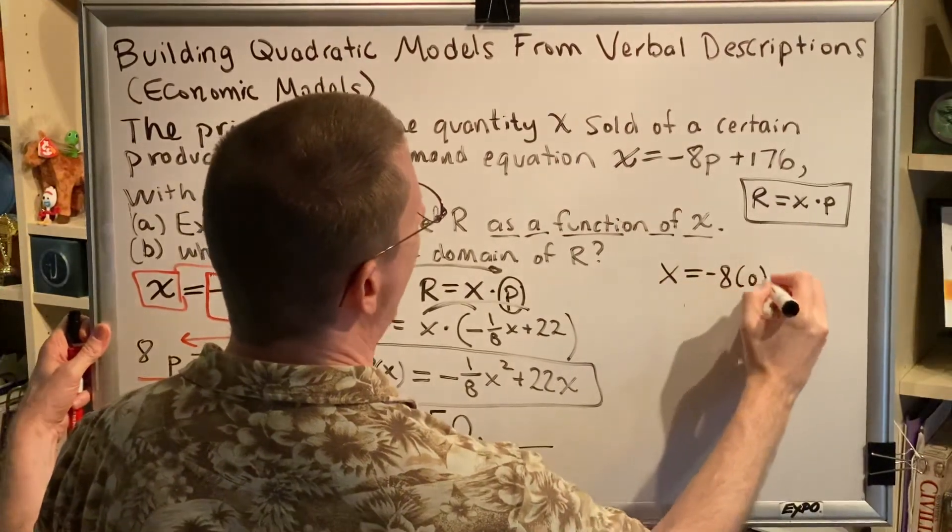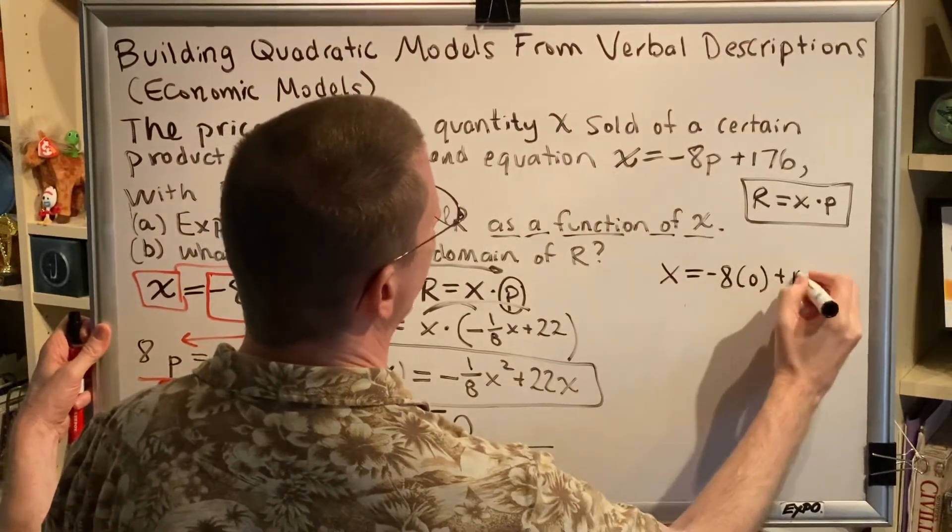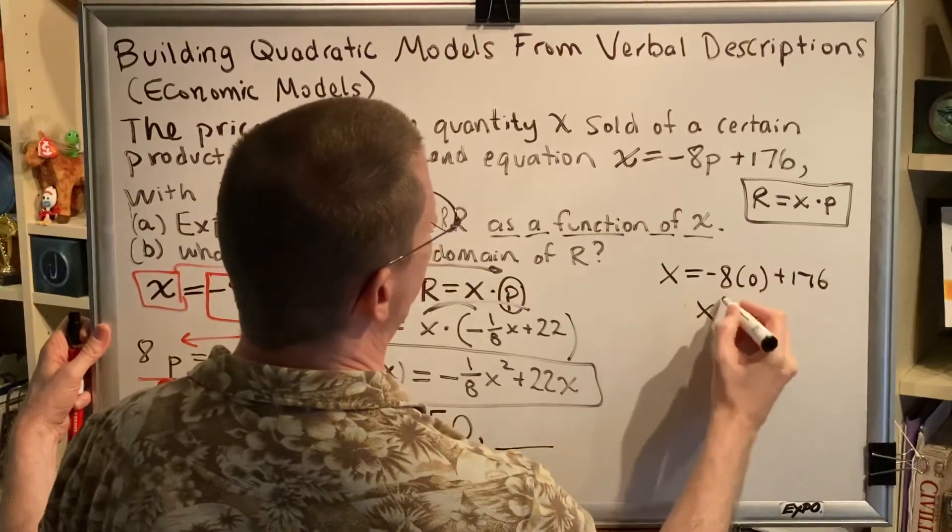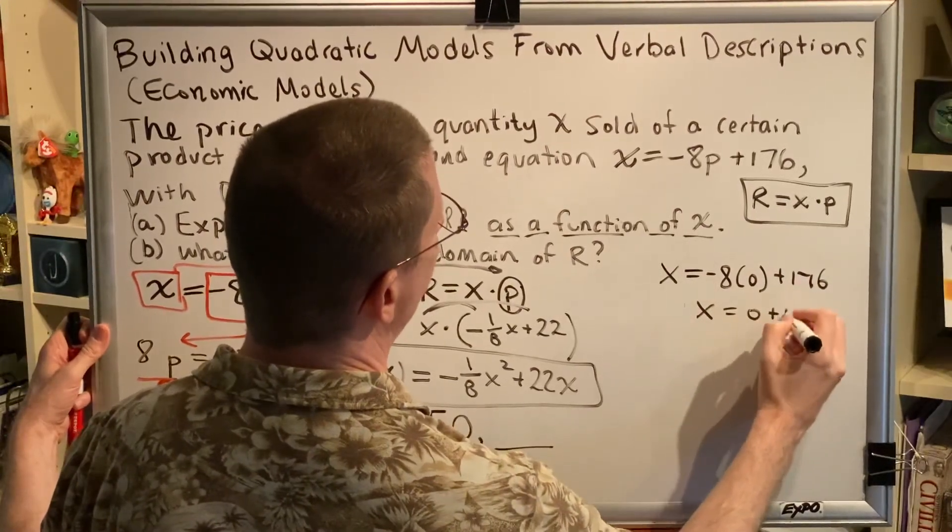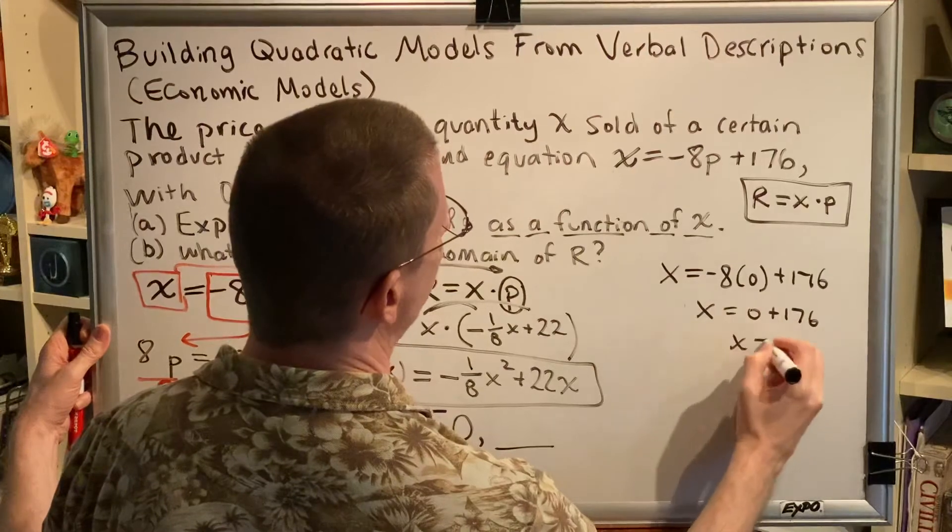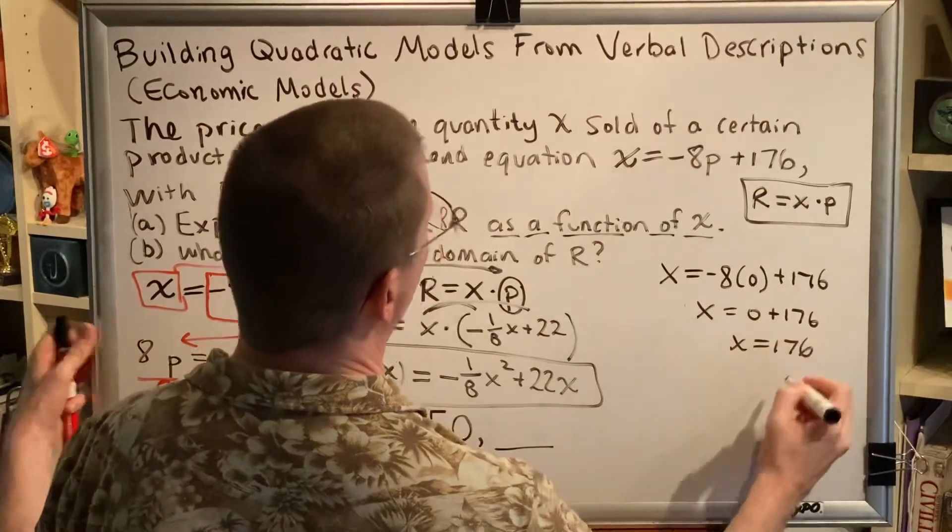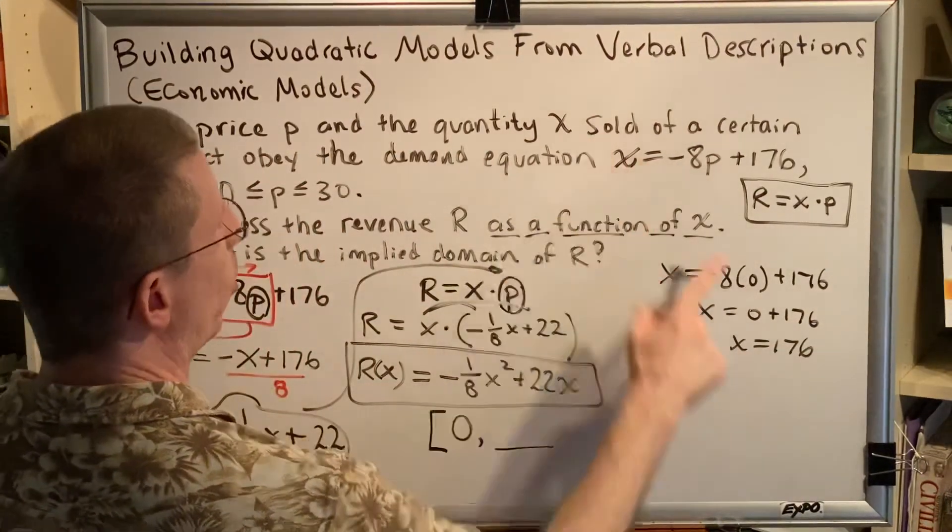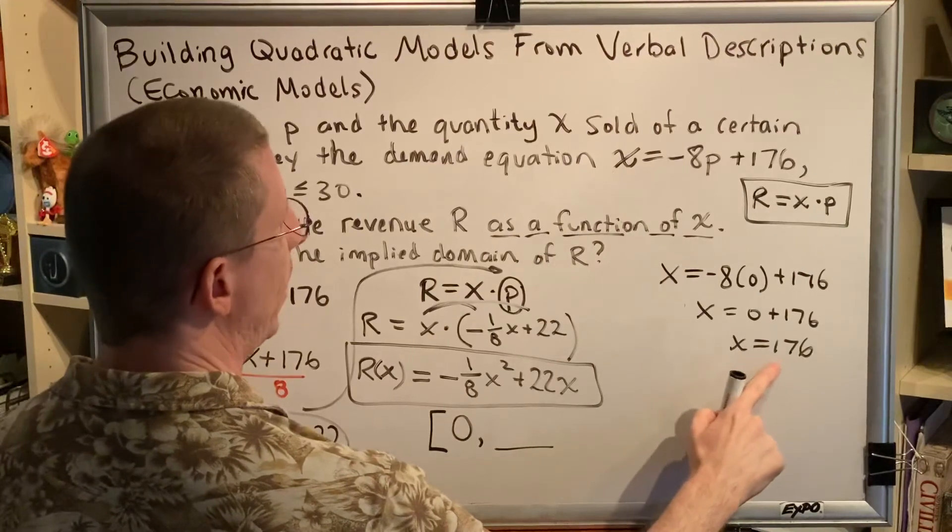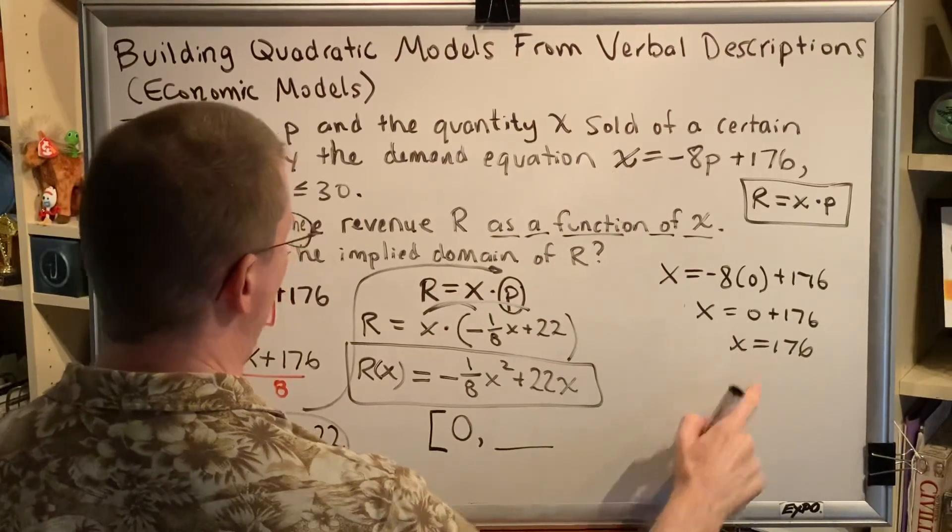Free means zero. So x = -8(0) + 176. This is just 0 + 176. And so we get x = 176. This tells you how many items will be sold when the price is free. In other words, this is how many items we have.